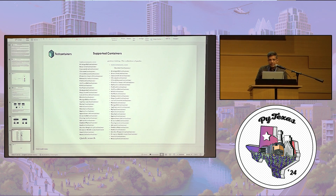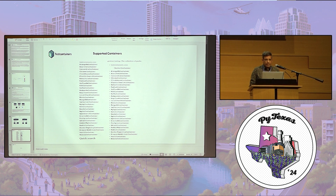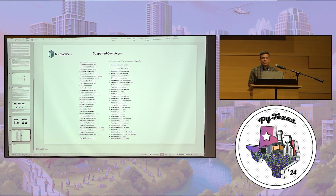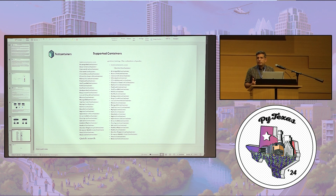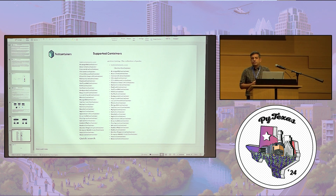Testcontainers has support for almost every container and tool available. For components that are missing — like Snowflake or others — you can request support from the Testcontainers team; they are very responsive. One solution is using the generic container option: if a component isn't available upfront, the generic container allows you to inject dependencies into it.